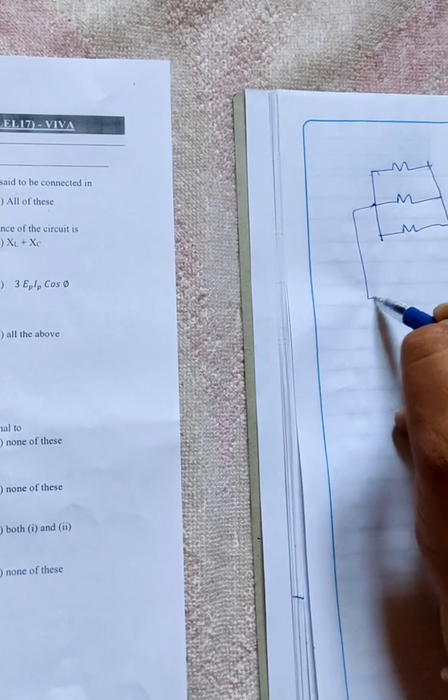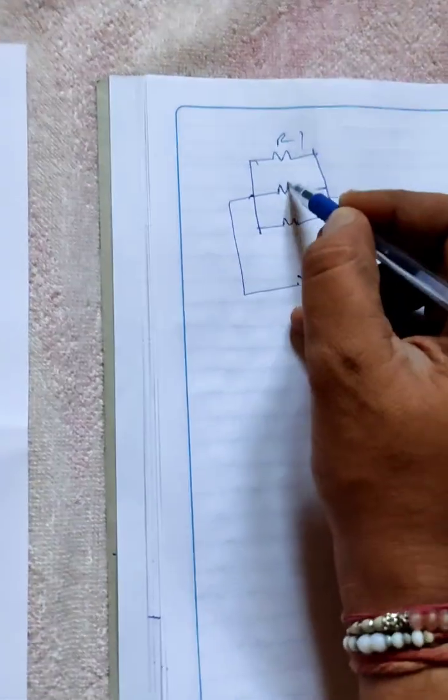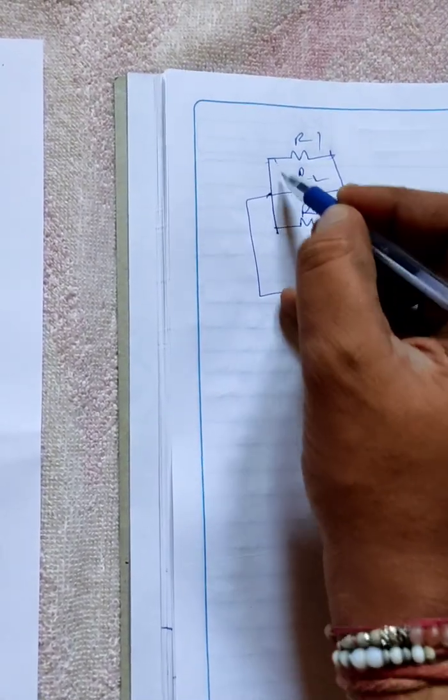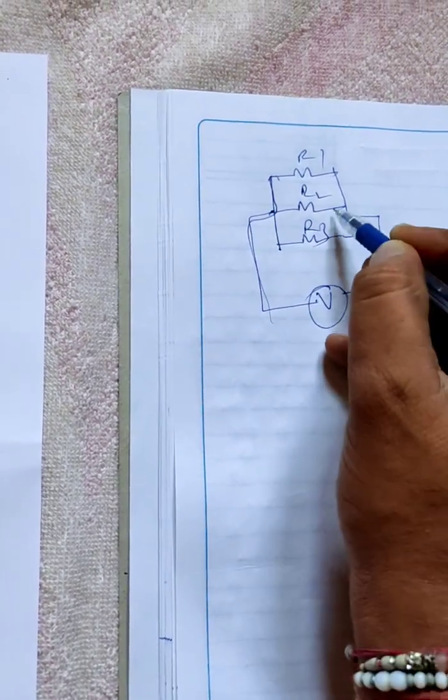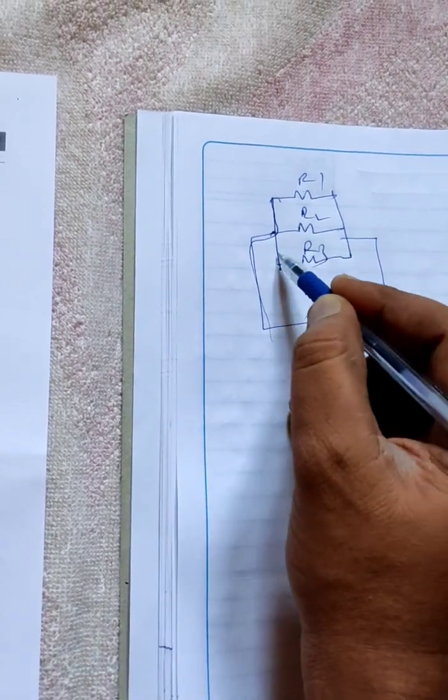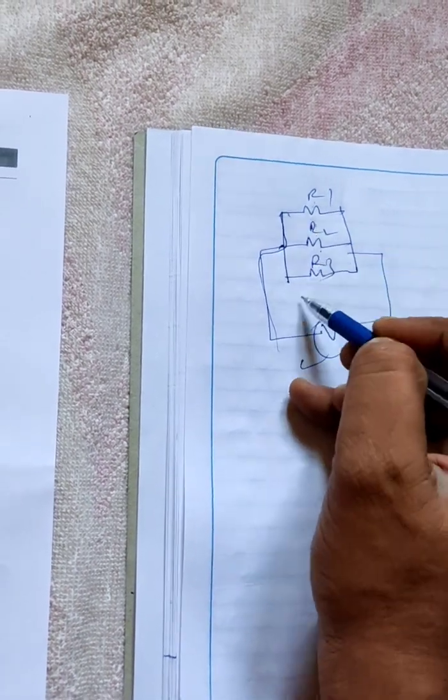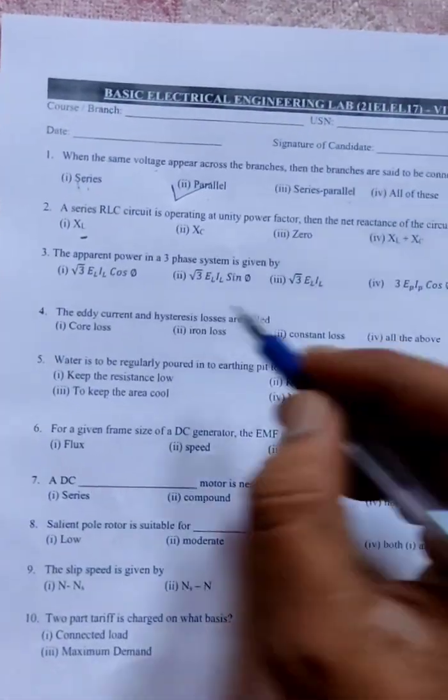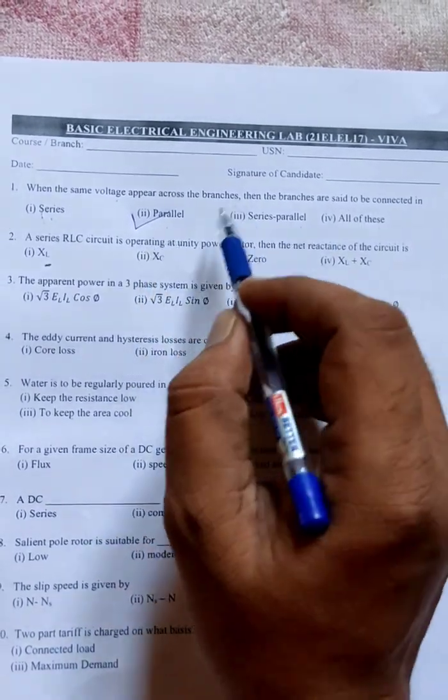See, these are the branches. Let me take branches consisting of resistances. If the branches are connected like this, for all the branches R1, R2, and R3, I applied some voltage. The entire voltage is applicable to R1, similarly the same voltage to R2, and R3 is also connected to the same supply voltage. In all these branches, voltage is the same, so this type of connection we call parallel. When the same voltage appears across the branches, then the branches are set to be connected in parallel.